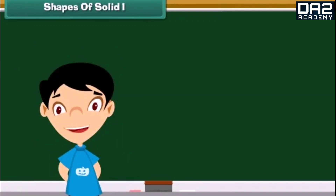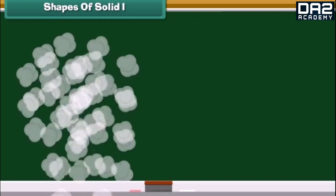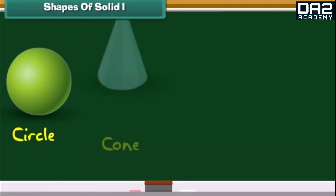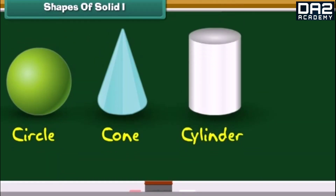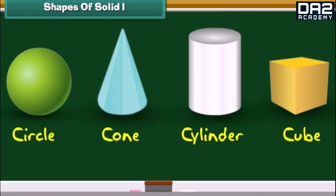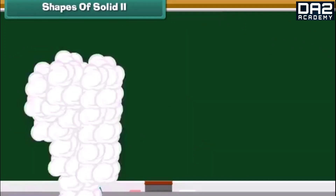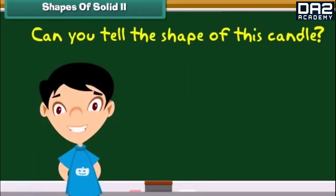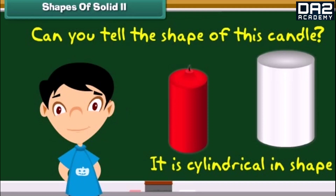Solids are of different shapes. We will now learn the names of solids of different shapes. The shapes and their names are displayed on screen: circle, cone, cylinder and cube. Can you tell the shape of this candle? Yes, you are right. It is cylindrical in shape.